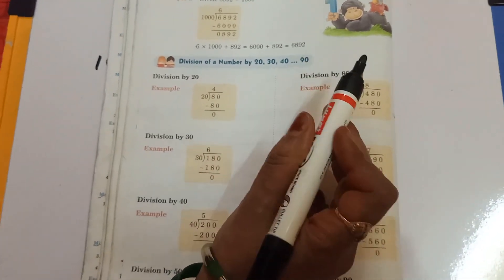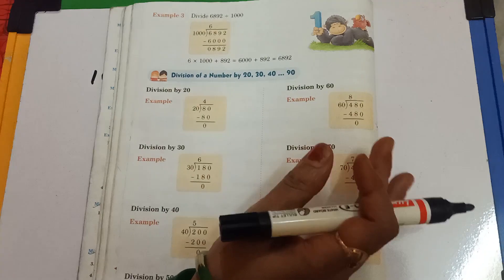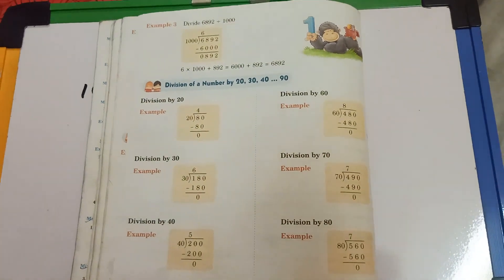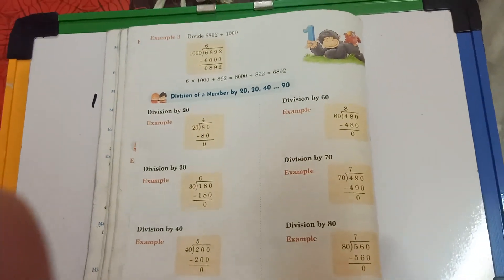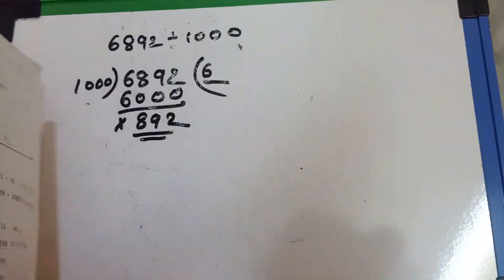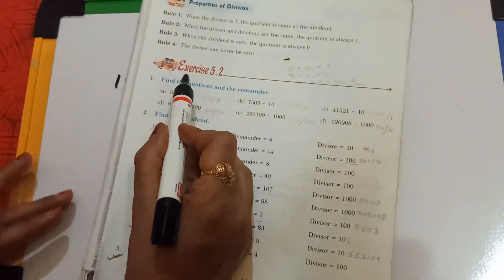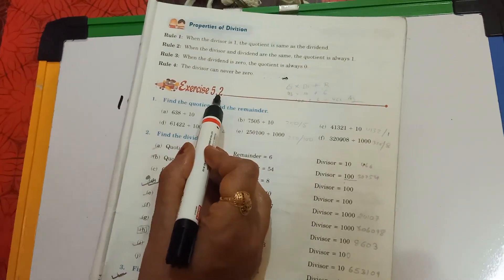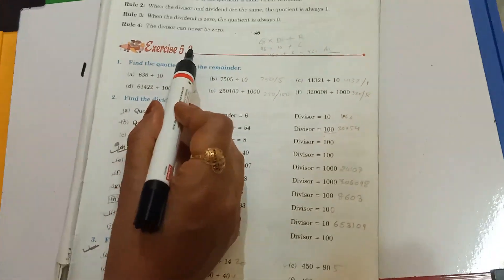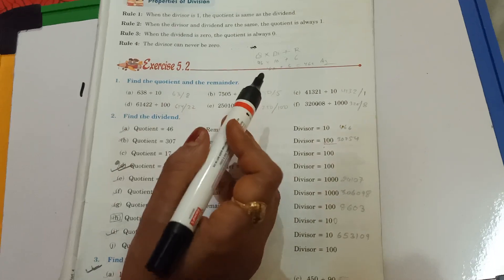See here — division of a number by 20, 30, 40, 50, 60, 70, 80, and 90 are all done the same way, children. Now I am going to start a new section — it is Exercise 5.2. Look carefully.